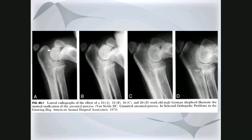Here are radiographs following the elbow of a German Shepherd puppy from 10 to 20 weeks of age demonstrating how the anconeal process fuses. At 10 weeks, there's hardly anything visible — maybe a faint mineralized structure. With time, there's increased mineralization. By 16 weeks, it's almost completely fused with just a little lucent area remaining. By 20 weeks, the anconeus is completely fused and well-formed, with its normal curved beak-shaped appearance.